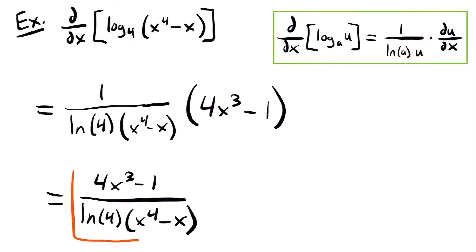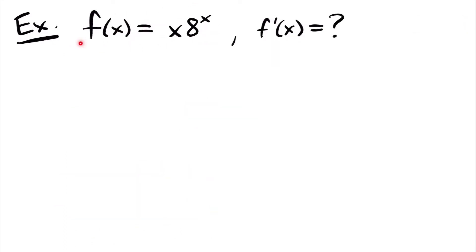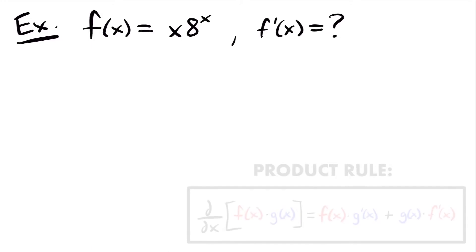So here we have the function f of x is equal to x times 8 to the power of x, and we want to find f prime of x, the derivative of this function. We're going to need to use the product rule for derivatives, because we have two functions being multiplied together. Our first function is x, and that is being multiplied by the second function, 8 to the power of x. If you don't quite remember the product rule, I'll have it up here on the screen for you to reference.